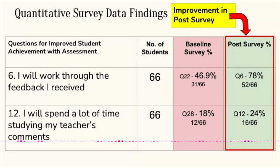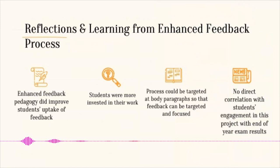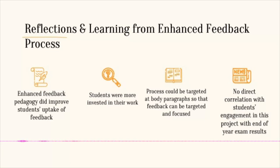Two more questions address motivation to work through feedback — whether students bother to understand it or spend a lot of time on it, which was still quite low. However, number three — 'I will make sure I understand my mistakes' — scored high, showing they want to engage. Number ten — 'I'll ask my teacher to explain comments I do not understand' — was curiously low, but number eleven — 'I'll try to address every comment my teacher made' — shows a level of independence. Our reflection is that this enhanced feedback pedagogy did improve students' uptake of feedback, meaning engagement and willingness to act on it, and we should continue being targeted so that learning and transference can be sharper for the students.